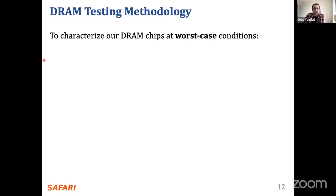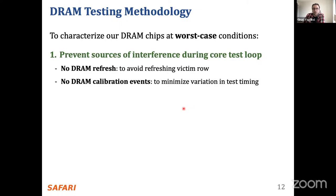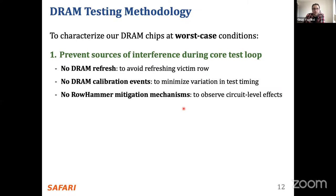In this testing methodology, we also try to reduce noise in our measurements. We characterize our DRAM chips for worst-case conditions to see row hammer effects at the circuit level. For that, we prevent sources of interference during testing — meaning we disable DRAM refresh operations, DRAM calibration events, and any possible row hammer mitigation mechanisms that could be implemented in the DRAM chips. These mitigation mechanisms require DRAM refresh commands to perform their mitigation actions.